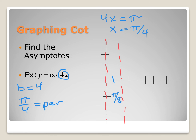When sketching the cotangent function, remember it's decreasing, so the graph goes down. Adding the period pi over 4 to the asymptote at pi over 4 gives the next asymptote at 2 pi over 4. A second cycle of the cotangent can then be drawn, giving two full cycles of the function.